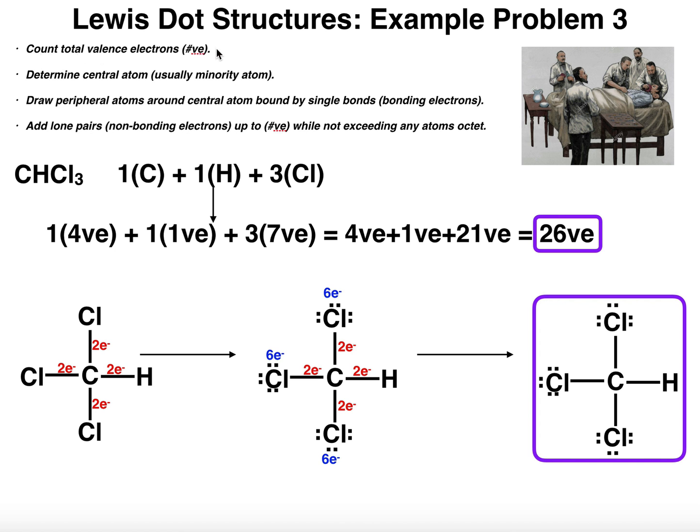But first let's count the total number of valence electrons. We're going to look at the number of valence electrons per atom and then add them up. We have one carbon, one hydrogen, and three chlorines. Let's first figure out how many valence electrons there are in a carbon atom.